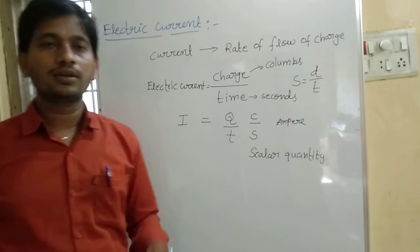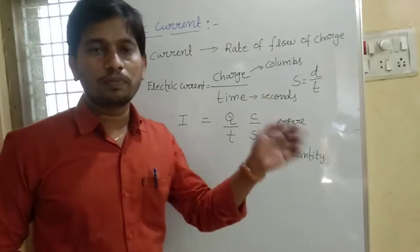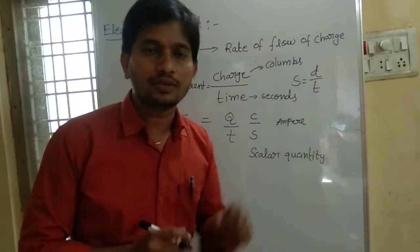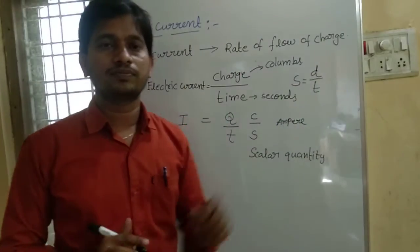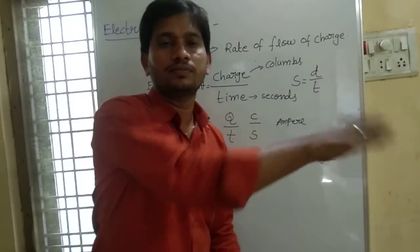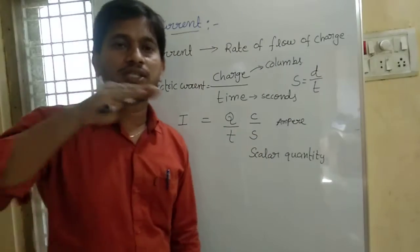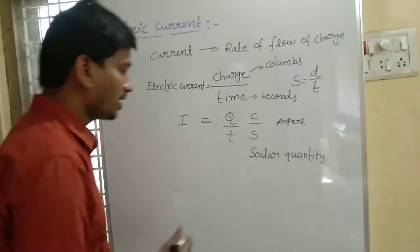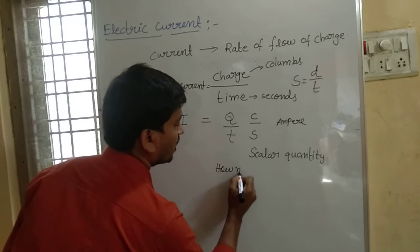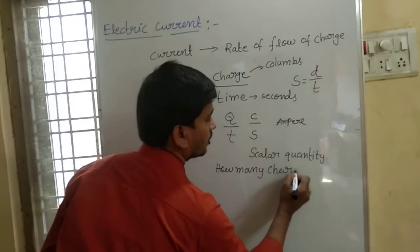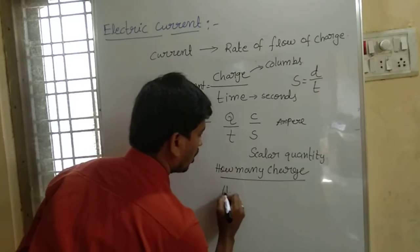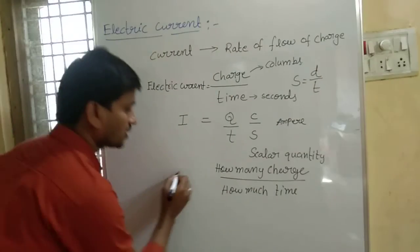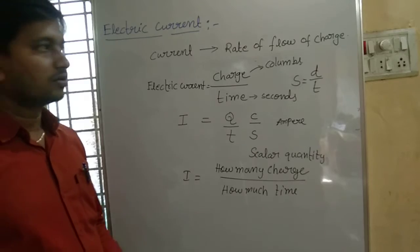What do you mean by current? The rate at which charges flow per unit time. Suppose I have a conductor — a wire. Charges are flowing through it. How many charges are flowing divided by how much time? That gives us Coulombs.